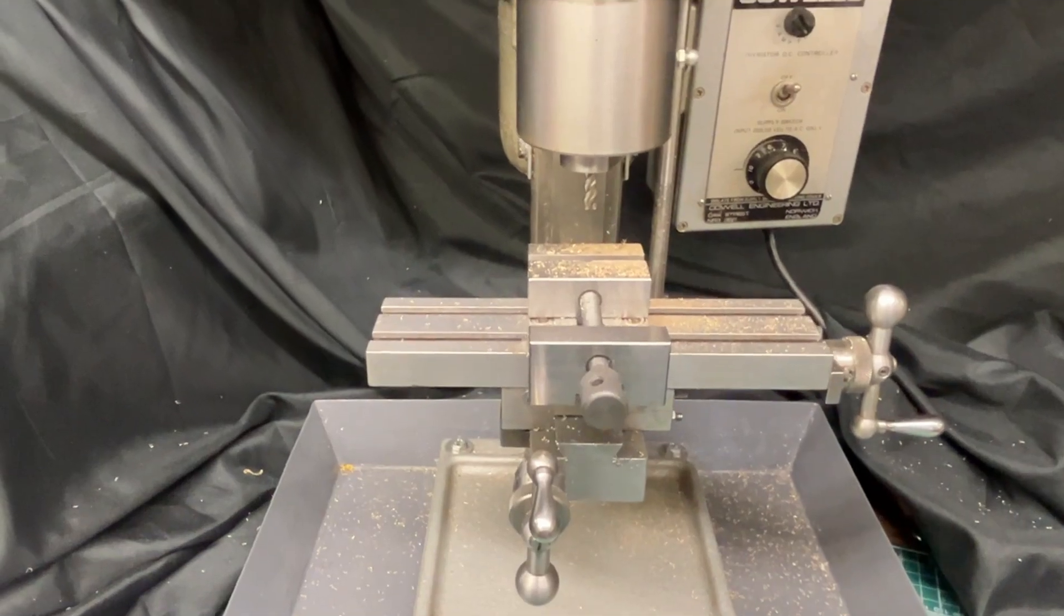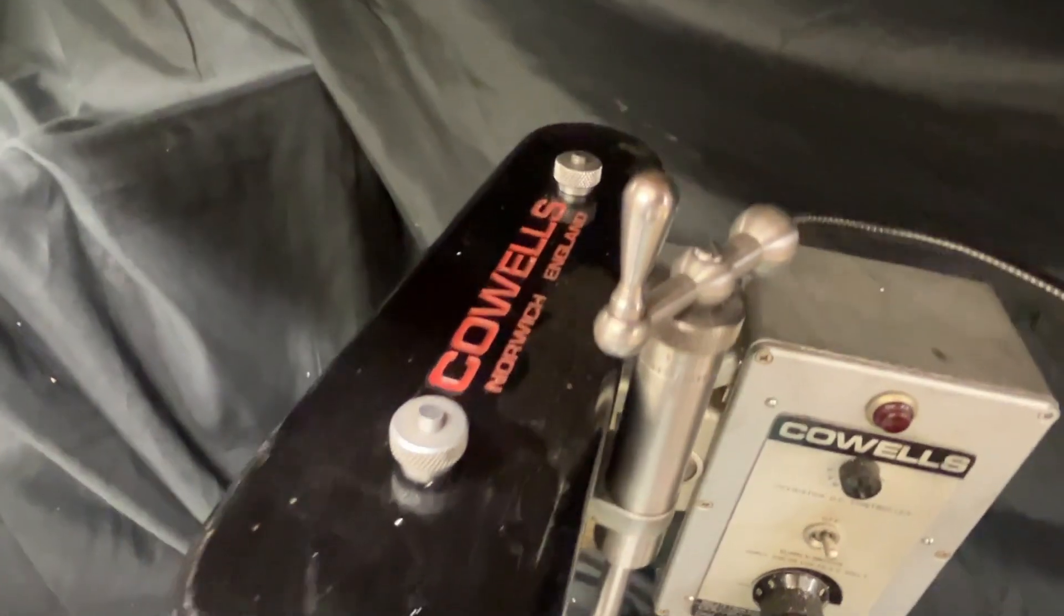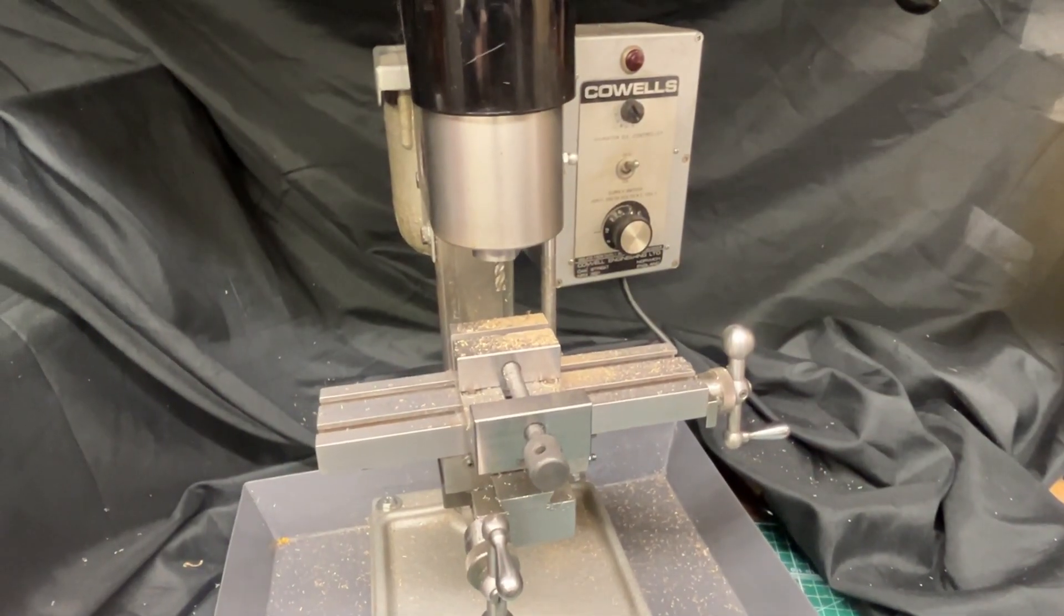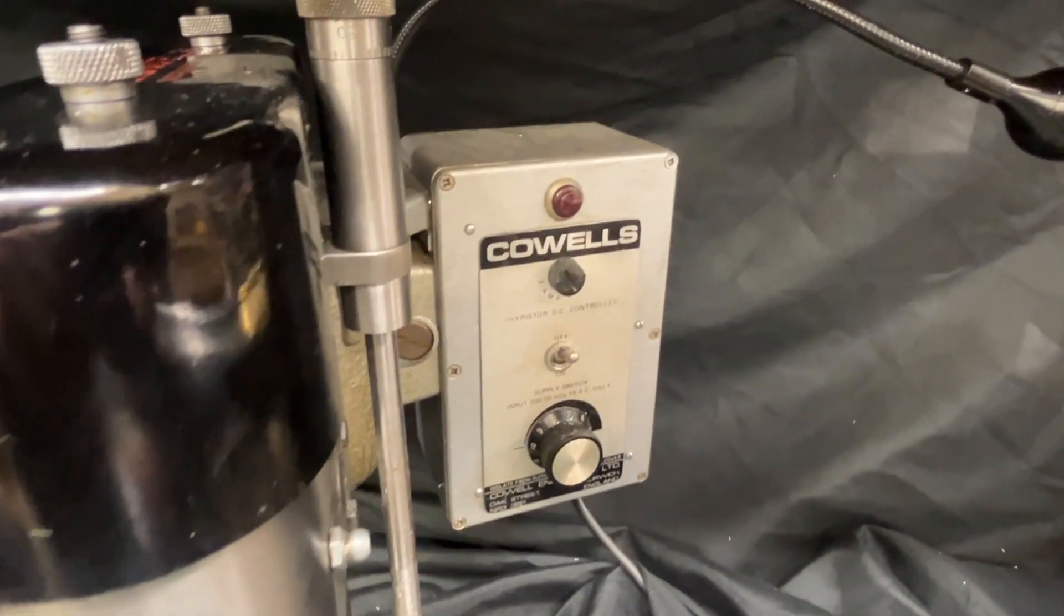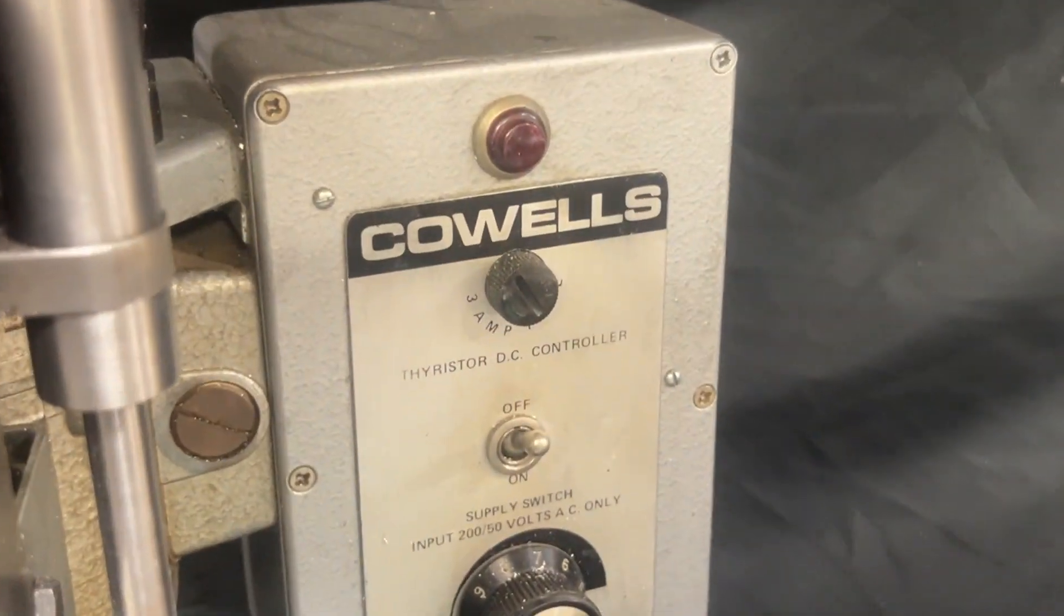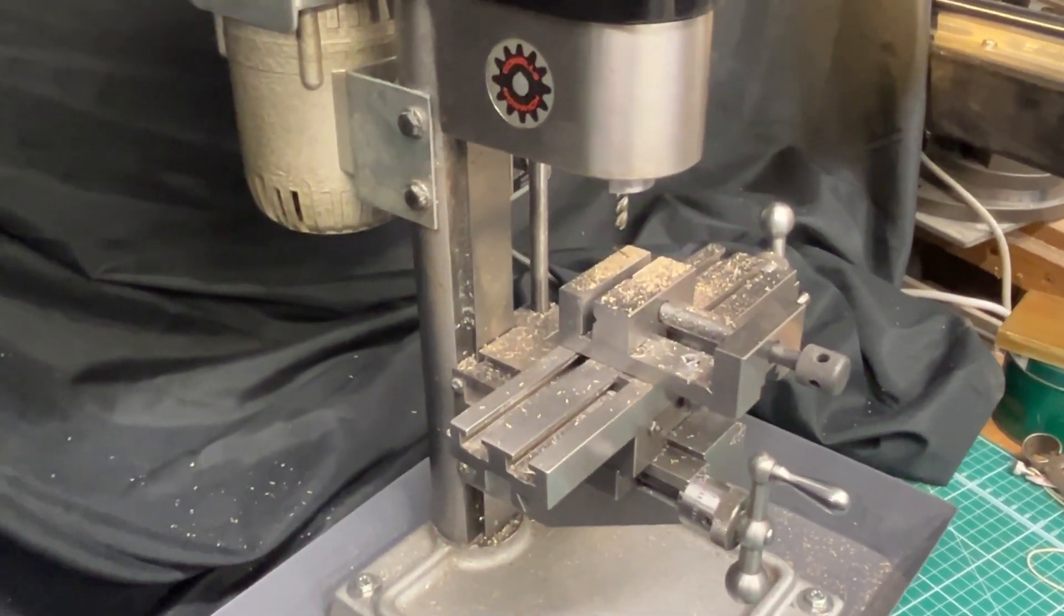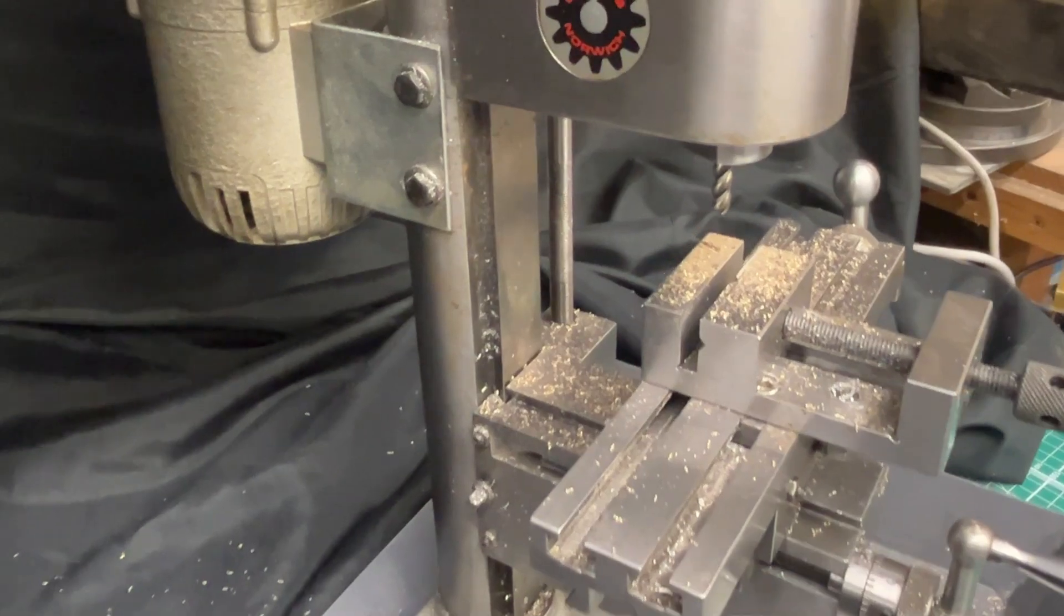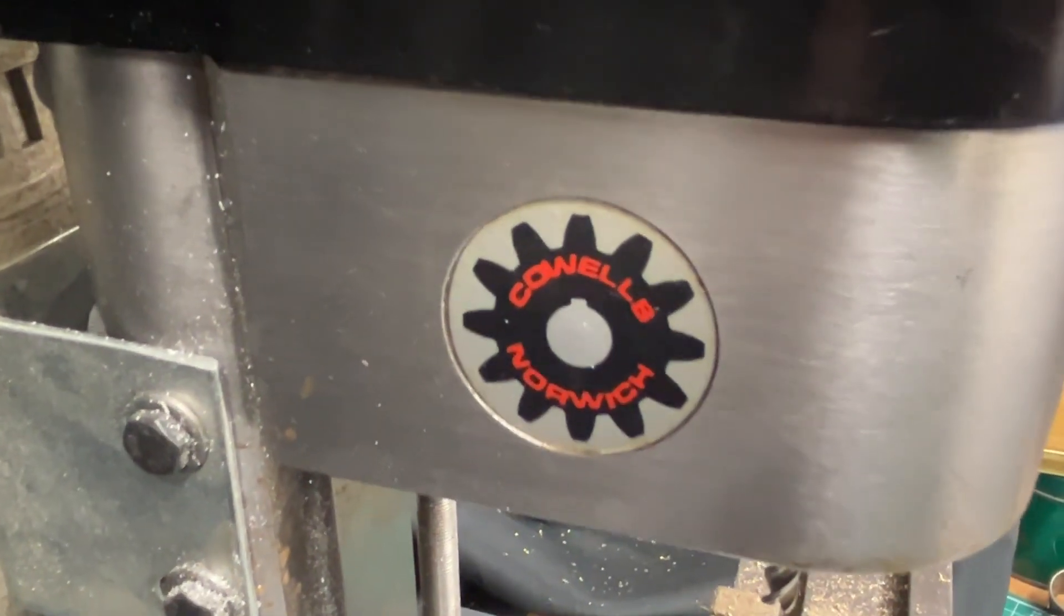So that's the Cowles vertical milling machine mark one. I'll be using it regularly in upcoming videos including on the Tompion regulator clock build so if you're interested in seeing it in action stay tuned, and if you've got any questions or thoughts about the machine or if you own a Cowles yourself I'd really love to hear from you in the comments. Thanks as always for watching and if you do find this useful or just enjoy the videos a like is genuinely appreciated. See you next time.